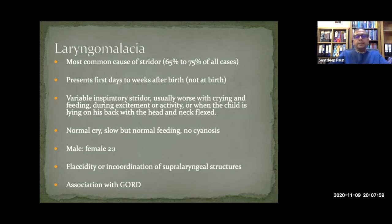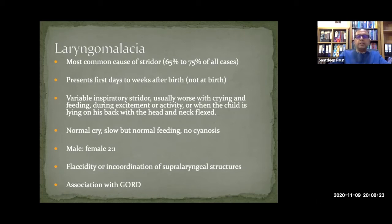It's a typical squeaky inspiratory stridor which is variable — and that's the key thing. It's worse in certain situations, especially when the child is crying, feeding, excited, upset, lying flat on the back, or when the neck is flexed. Importantly, the cry is normal — no hoarse cry. The child is able to feed but it's a slow feed because the child gets tired or can't coordinate breathing and feeding.